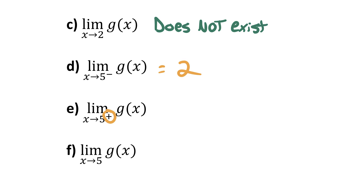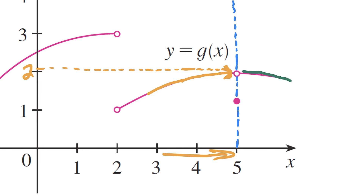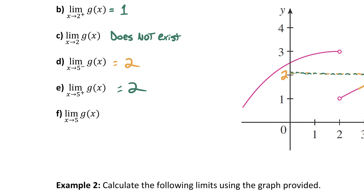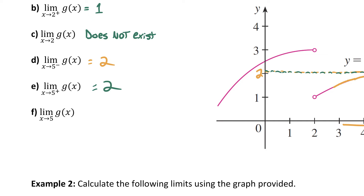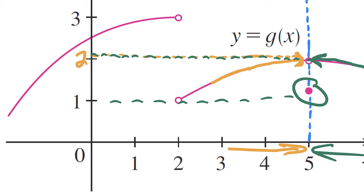Now looking to the right of x=5 for Part E: as x approaches 5 from the right, the y value of the function seems to be approaching the exact same value — 2 again. So the limit as x approaches 5 from the right is also 2. Since the left and right limits both exist and are equal, the overall limit of g(x) as x approaches 5 is 2. Note that when x=5, the actual value of the function is 1, but for limits we only care what the function is approaching, not what it equals at the point.